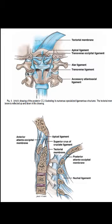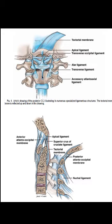This is a posterior view and the spinous processes and the posterior part of the foramen magnum have been removed. The tectorial membrane, which is an extension of the posterior longitudinal ligament, has also been removed from the connection between the body of the C2 vertebrae. The Dens sits right here and this is the anterior arch of C1.